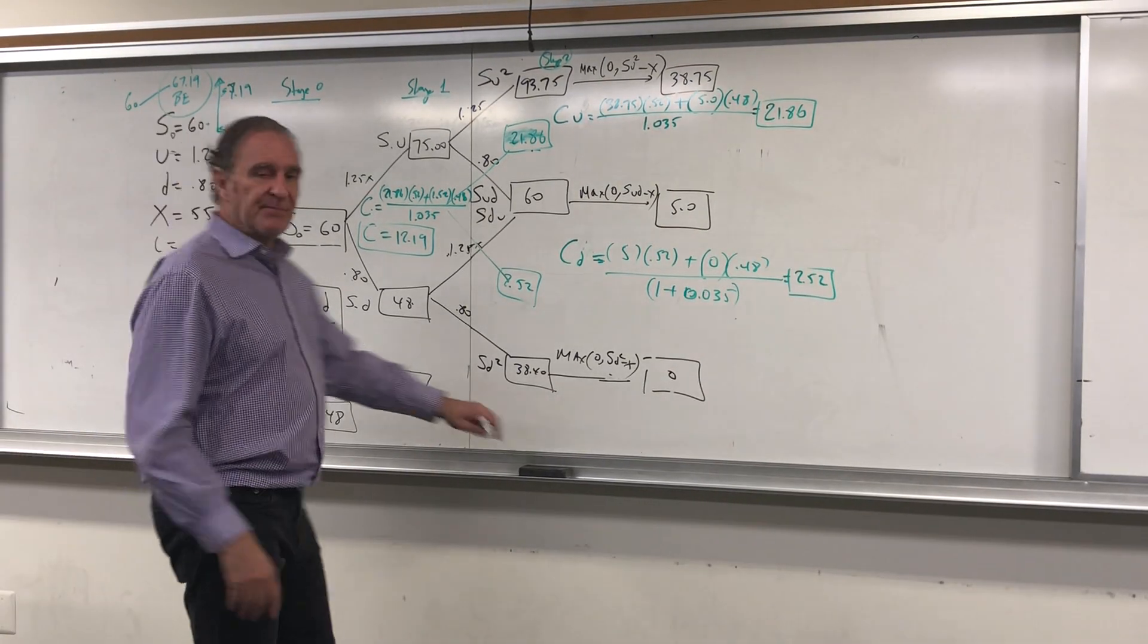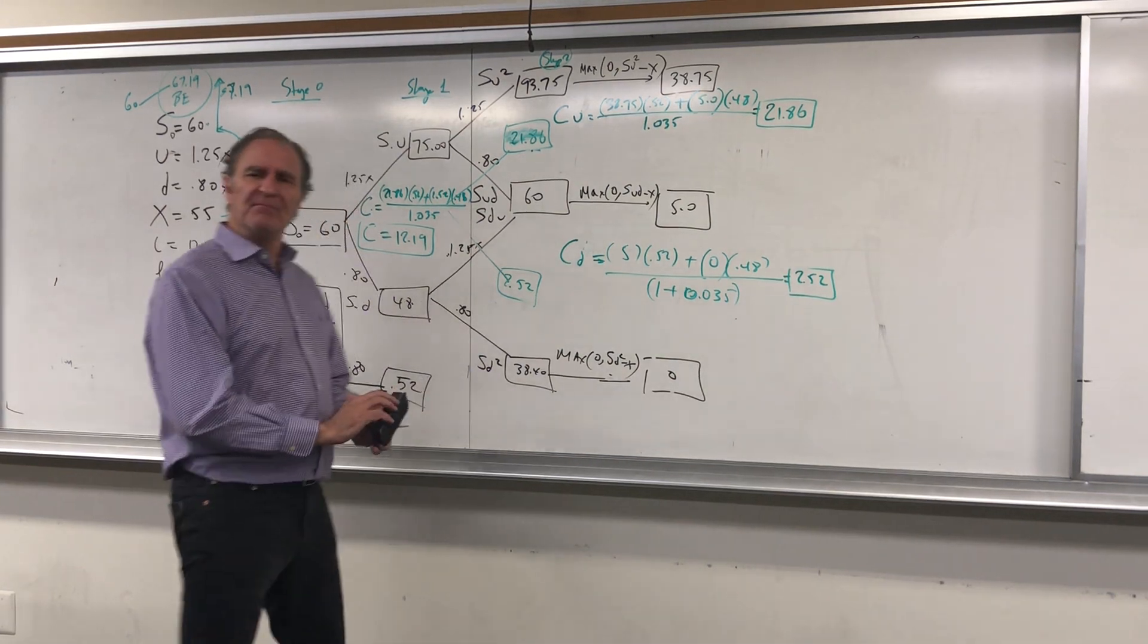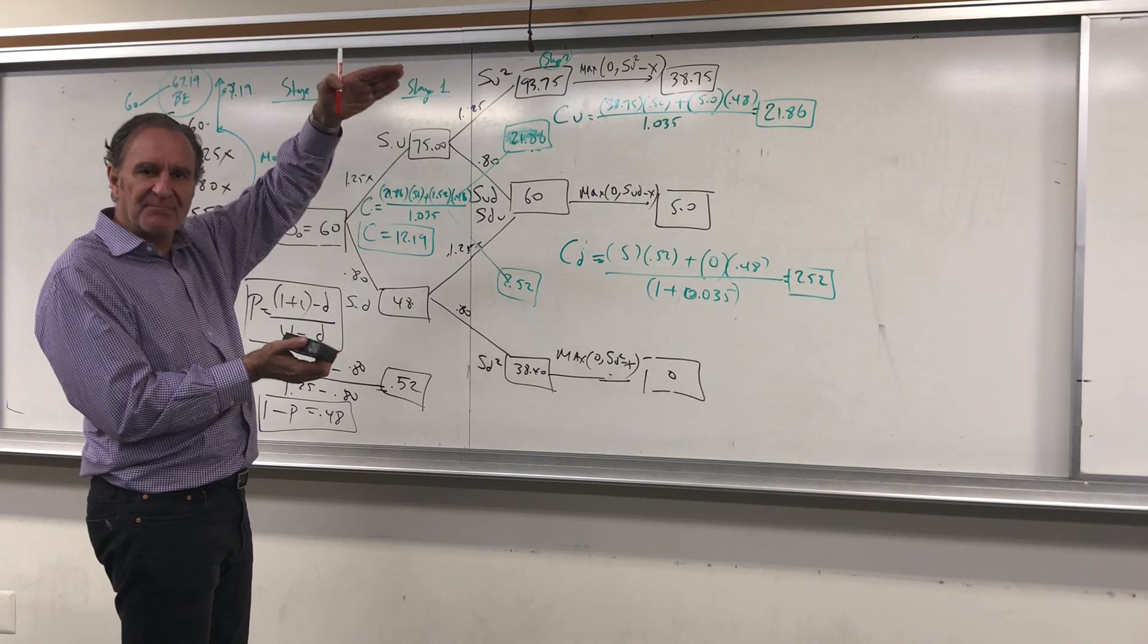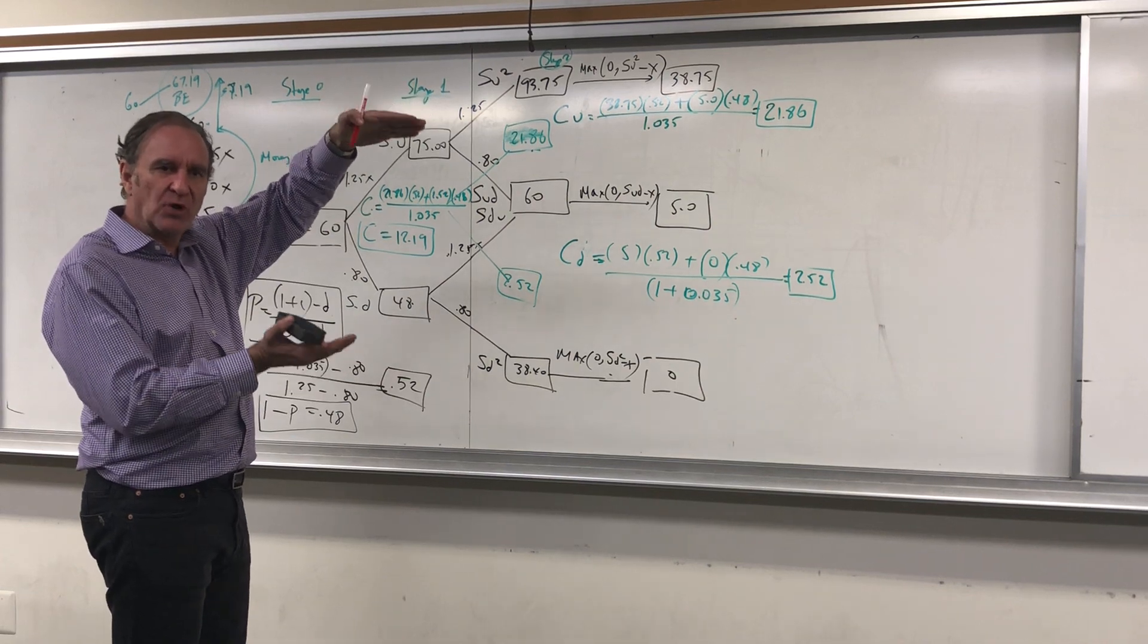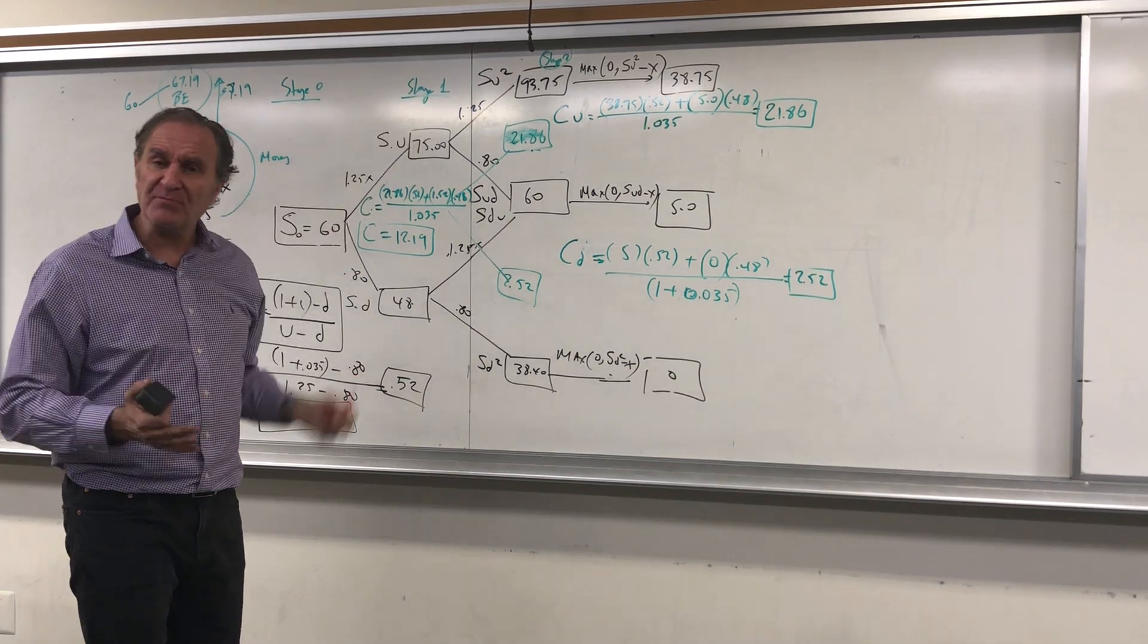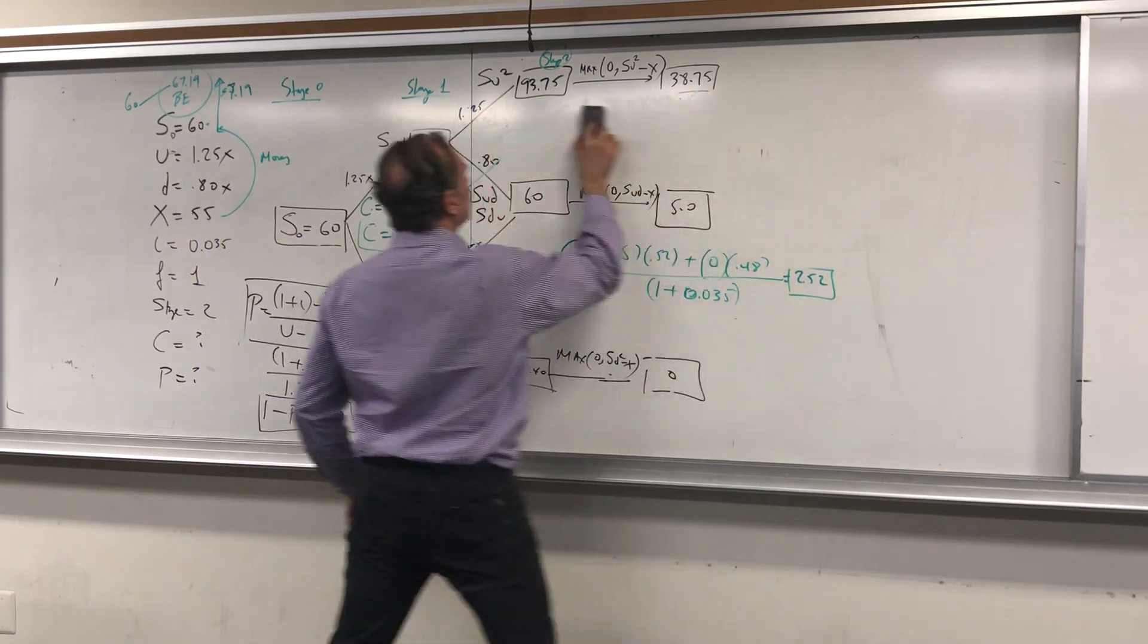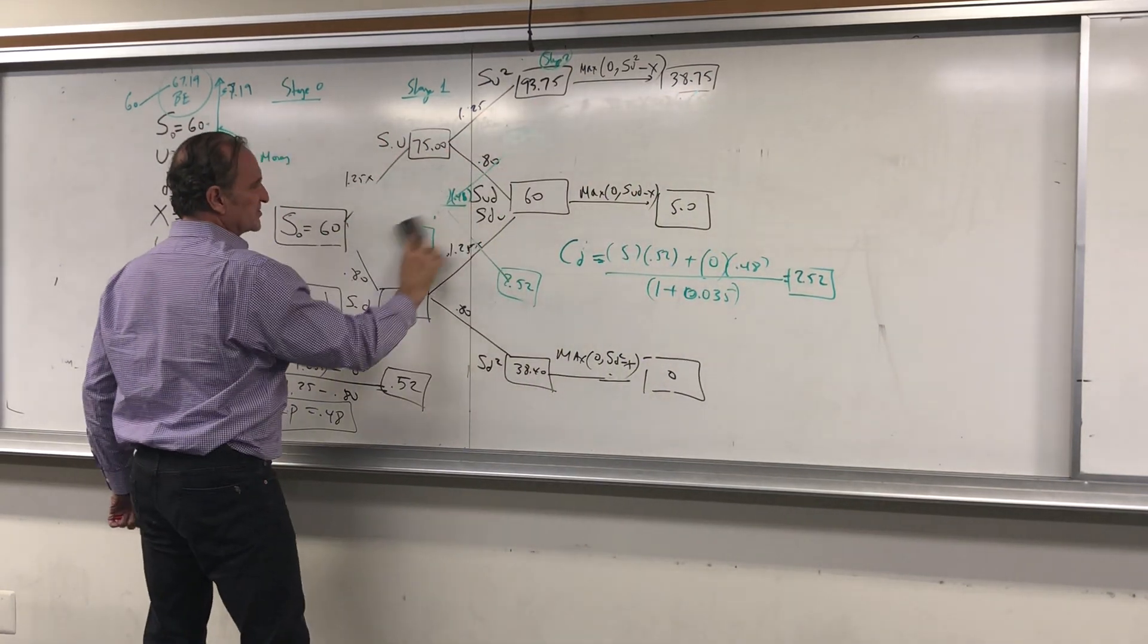Now I'm going to calculate the put option using the same numbers. Of course it has to be parity - if the stock goes up, it has to come down. So the put option and call option always add up to 100% probability. Let's get rid of the green stuff which is the call option.